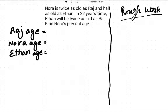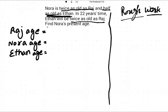Please subscribe to this channel, like, comment and share this video. Okay, let's start this question — it's a tricky question. Noora is twice as old as Raj, and half as old as Athan. In 22 years' time, Athan will be twice as old as Raj. Find Noora's present age.